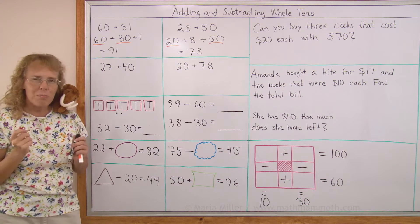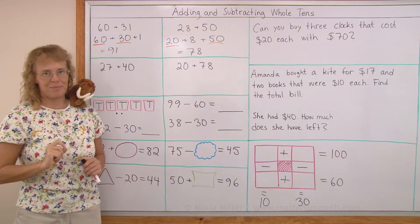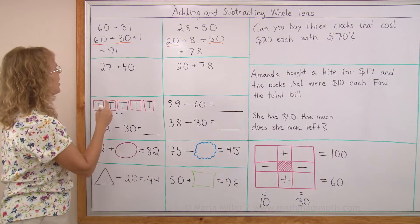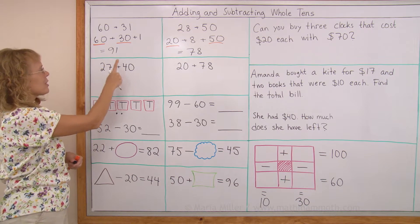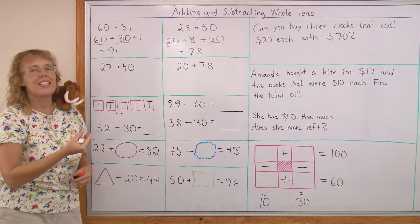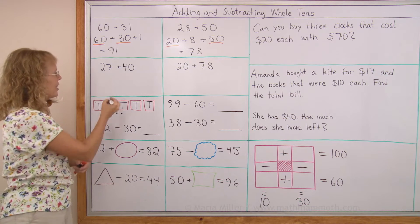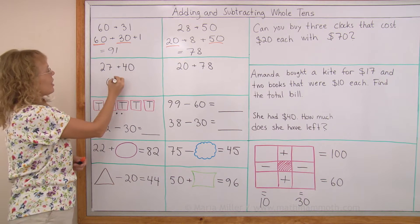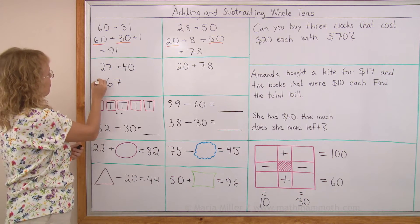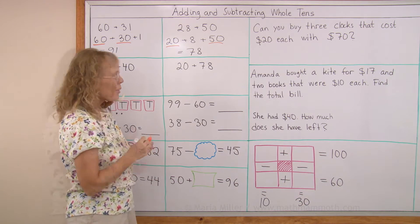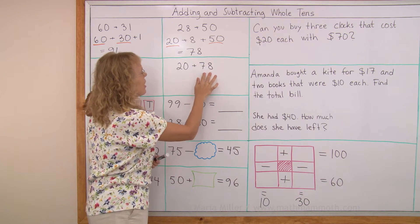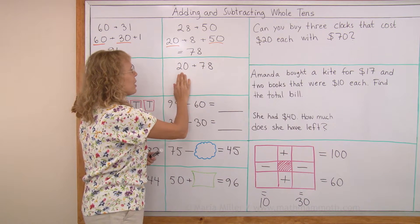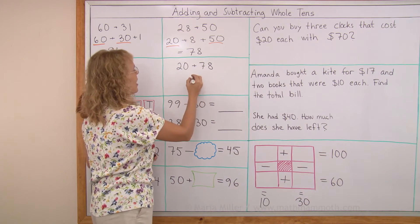Two more practice problems. You can pause the video now and try them on your own. Here I think of the 2 tens and 4 tens: 20 and 40 makes 60. And then there's the 7, so I get 67. Over here I think of 78 as 70 and 8. So I add 20 plus 70, and then I get the 8 there too.